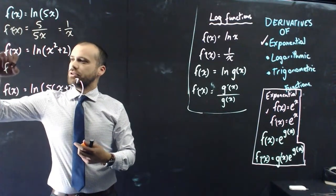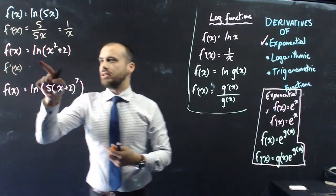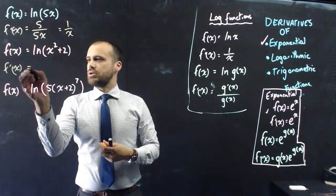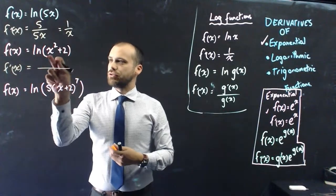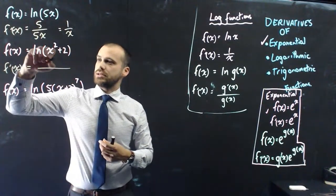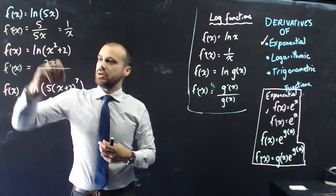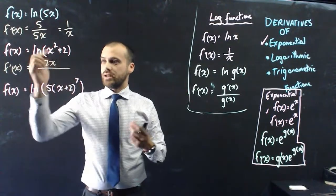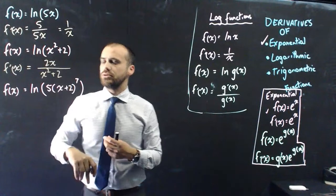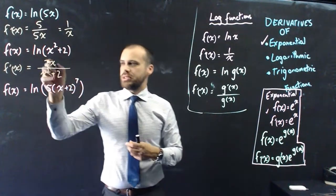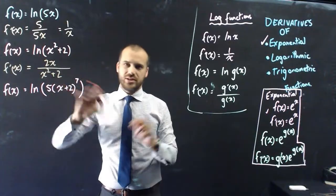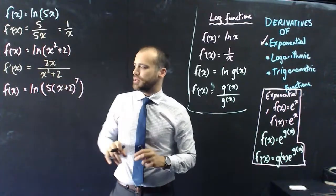If I want to find the derivative of ln of x squared plus 2, that's going to be equal to the derivative of x squared plus 2, which is 2x, over x squared plus 2. We can't really simplify that - don't be tempted to cancel things out because there's a plus there.